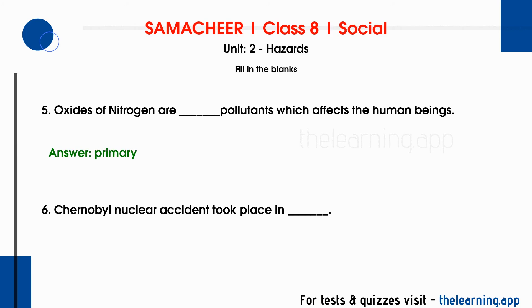Sixth question: the Chernobyl nuclear accident took place in dash. The correct answer is 26 April 1986. The Chernobyl nuclear accident occurred in Ukraine, where a nuclear plant had a major accident.